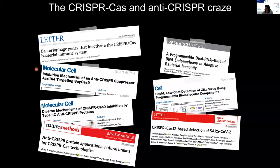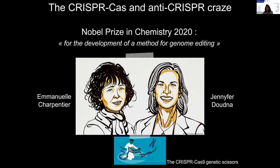This ongoing CRISPR-Cas9 and anti-CRISPR race has culminated in the 2020 Nobel Prize in Chemistry, awarded to Emmanuel Charpentier and Jennifer Doudna for the development of a method for genome editing with the CRISPR-Cas9 genetic scissors, which, since the proof of principle published less than a decade ago, have become the famous versatile tool for genome editing.